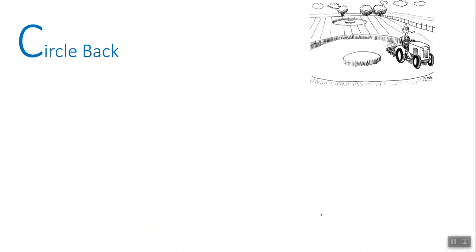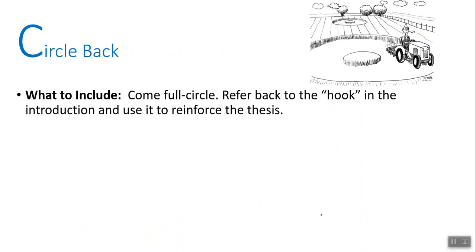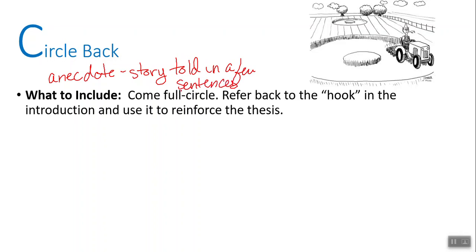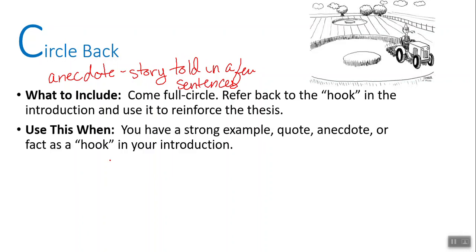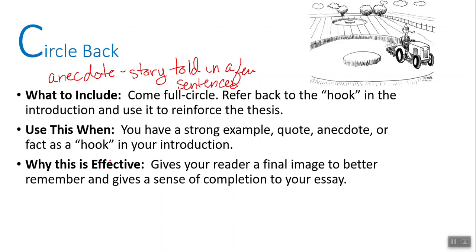Circle Back is our next type. If you have a really strong hook in your introduction, you can come full circle and refer back to the hook in your conclusion. This is a great way to reinforce your thesis. Sometimes people will use an anecdote — a short story, usually told in a paragraph. You can have part of your anecdote in the introduction and the end of your anecdote in the conclusion. If you have a strong example, quote, or anecdote, it gives your reader a final image to better remember what you're talking about.